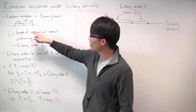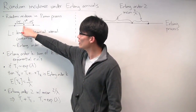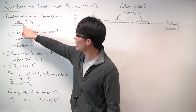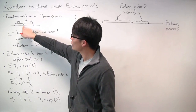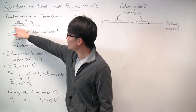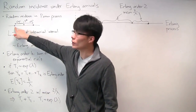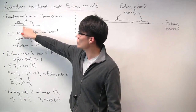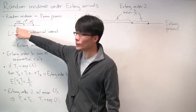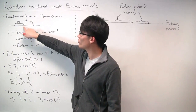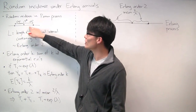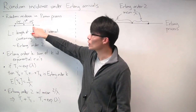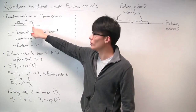The reason for that is that it comprises two parts: the time since the last arrival until t*, which is exponentially distributed, and the time from t* until the next arrival, which is also exponentially distributed.